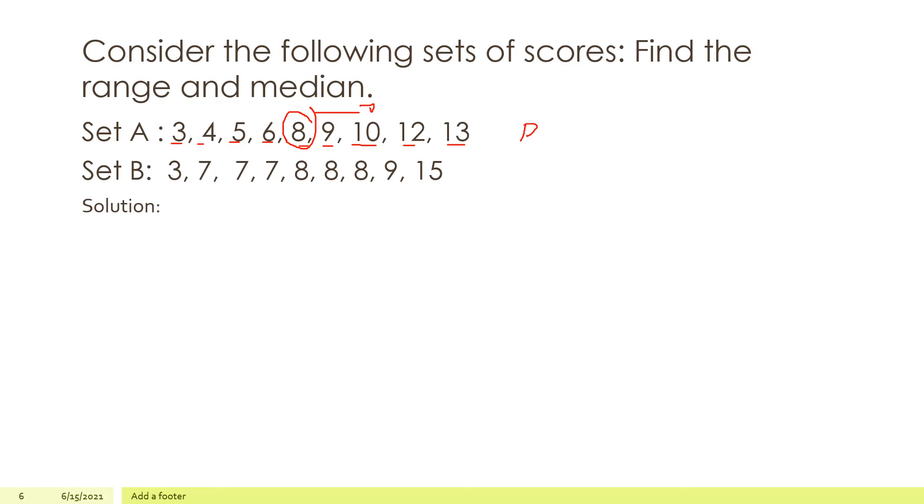Pag hinanap natin yung range, ang range ay 13 minus 3. So there are 10. Ang letter B naman, so dito, ang median ay 8. Ang range ay, okay, ang median ay 1, 2, 3, 4, 5, 6, 7, 8, 9. So still 8. And the range is 15 minus 3 is 12. So ano masasabi mo dyan? Yun yun lang paghanap na. Hanapin lang din naman eh.